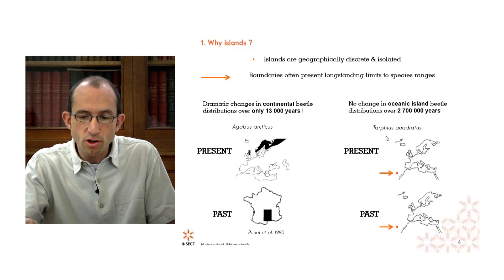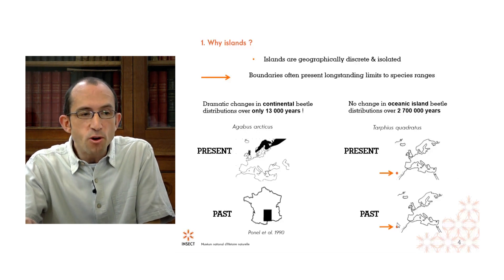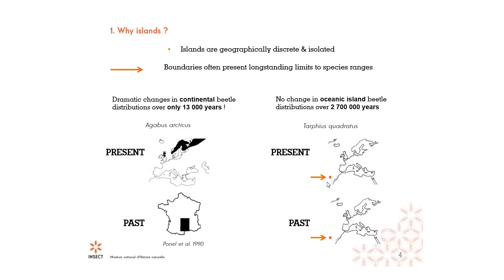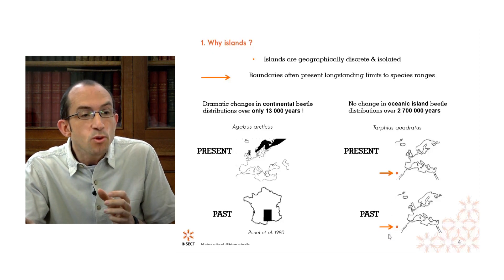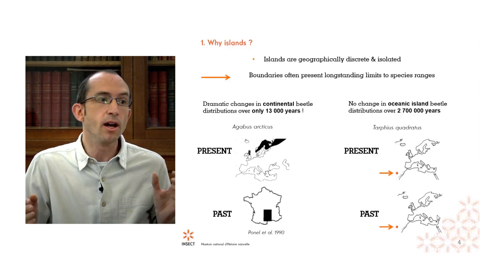This situation really contrasts with what we very often see on oceanic islands. On the volcanic island of La Palma in the Canary Islands, based on the phylogeography of the beetle Tarpheus quadratus, we can infer that this species has been confined to this tiny volcanic island for around 2.7 million years. My message here is not that island species are older, but rather that these island species have generally moved much less.